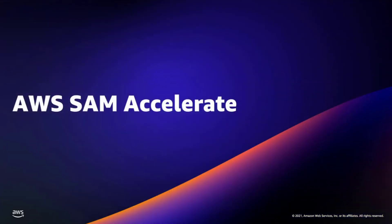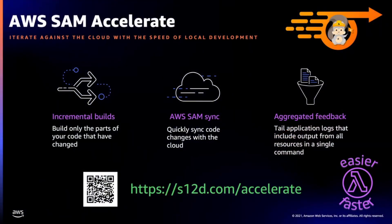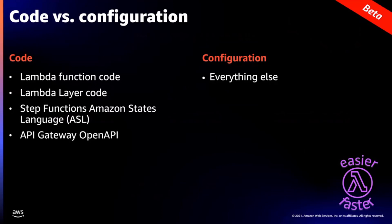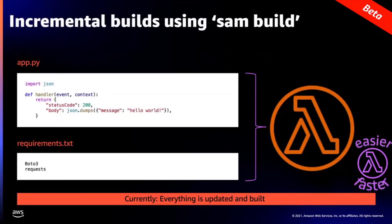Our newest launch for SAM is SAM Accelerate. The big idea is that it makes testing your application much easier because you're testing in the cloud — you don't have to emulate your complete infrastructure. There are three new features: incremental builds, SAM sync, and aggregated feedback. To understand SAM Accelerate, we first need the difference between code and configuration. Code is everything in your Lambda function, Lambda layers, Step Functions Amazon States Language file, and API Gateway OpenAPI file. Everything else is configuration. Incremental builds is an update to SAM build — previously it built everything (code and configuration) every time regardless of what changed. Now, unless you add new dependencies, only the code itself is built out, since dependencies don't change that often.